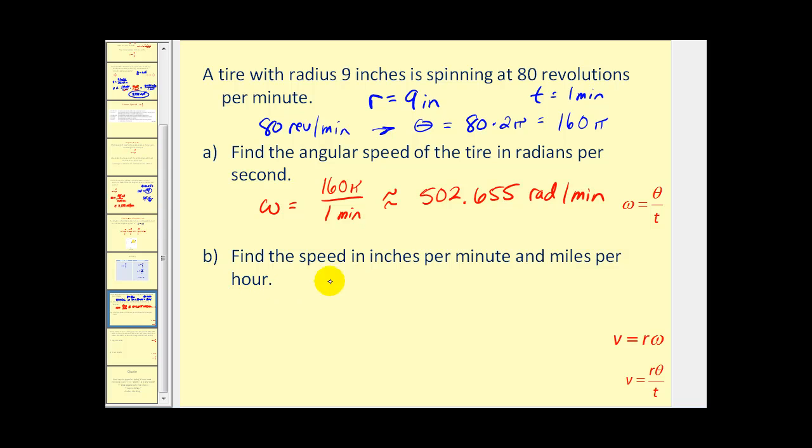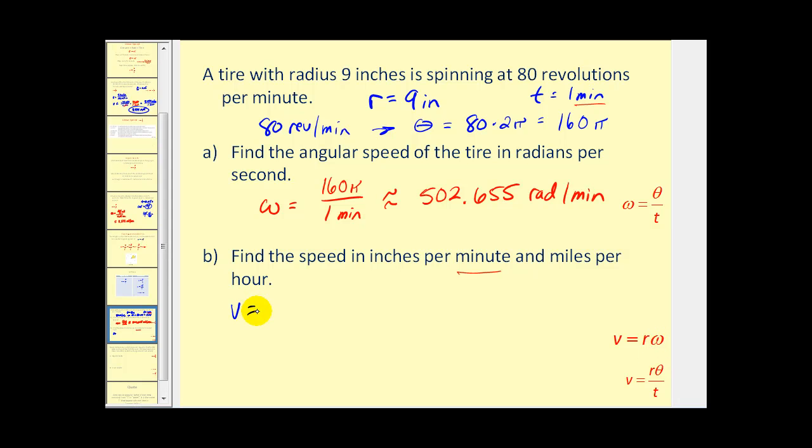Next to find the linear speed in inches per minute and miles per hour, we'll start with minutes because that's the given time. We'll use this first formula since we already found the angular velocity. So our linear velocity is equal to the radius 9 inches times our angular velocity. If we multiply this together we will obtain 4523.893 inches per one minute.